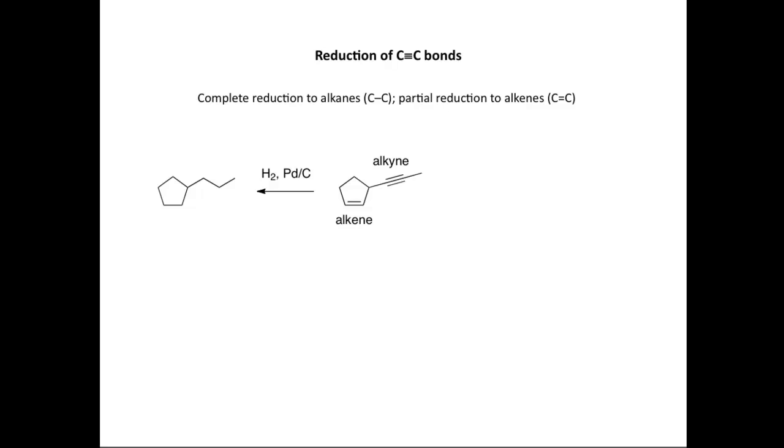However, if we use a different catalyst, we can selectively now reduce the alkyne triple bond. If we use hydrogen and Lindlar's catalyst, which is described as a poison catalyst, we can selectively reduce the alkyne. We can convert it into an alkene. The other alkene remains intact.